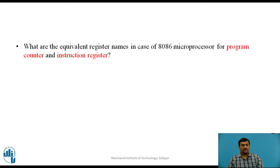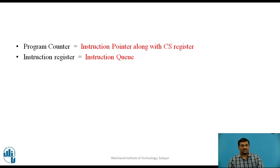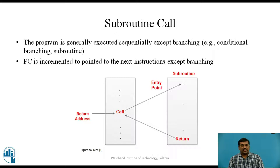Now pause the video for two minutes and write down the answer to the following question. The equivalent register for the program counter is the instruction pointer along with the CS register in the case of the 8086 microprocessor, whereas the equivalent register for the instruction register is the 6-byte instruction queue. The program is generally executed sequentially except for branching — that is, the program counter contents are incremented to point to the next instruction except for branching instructions.